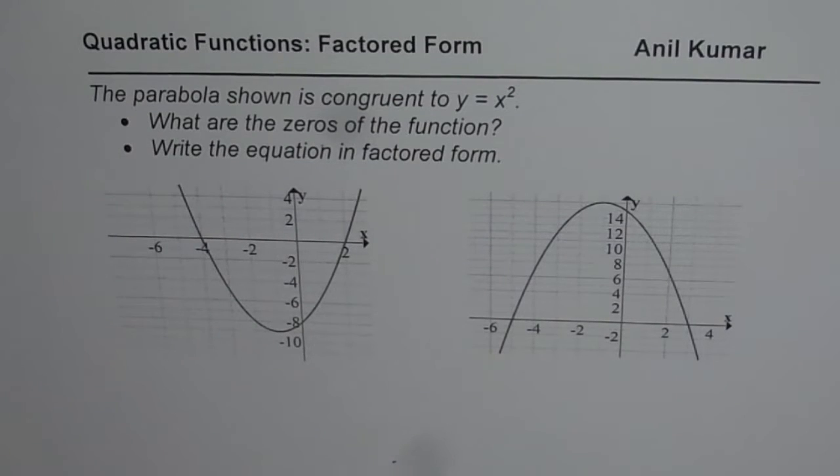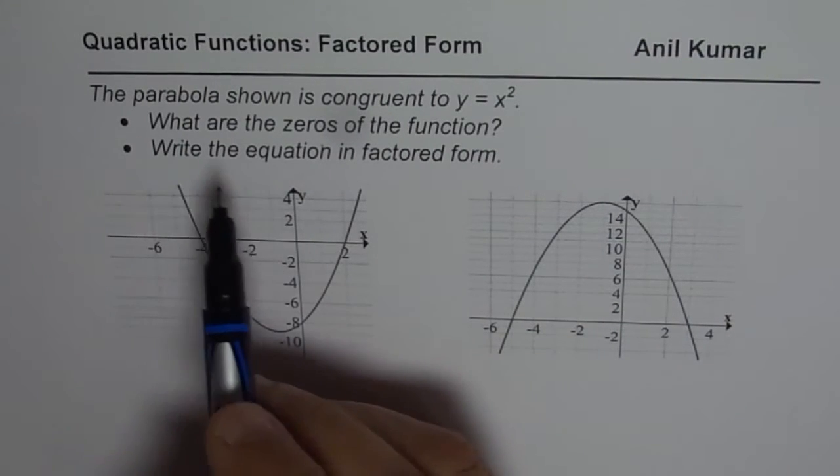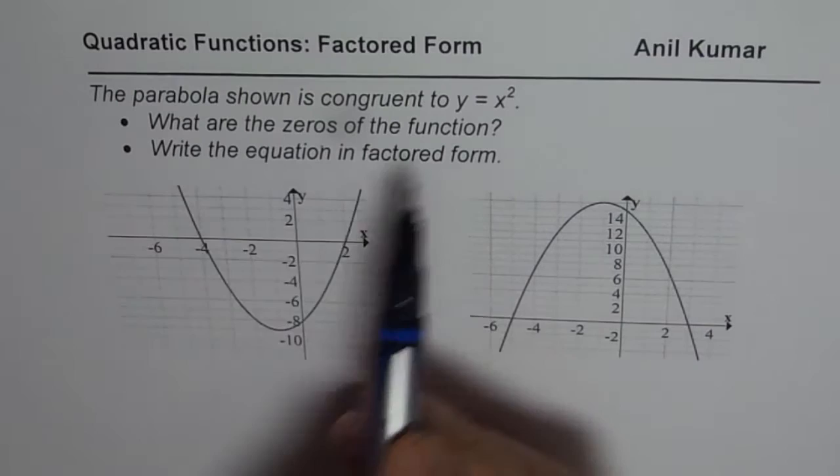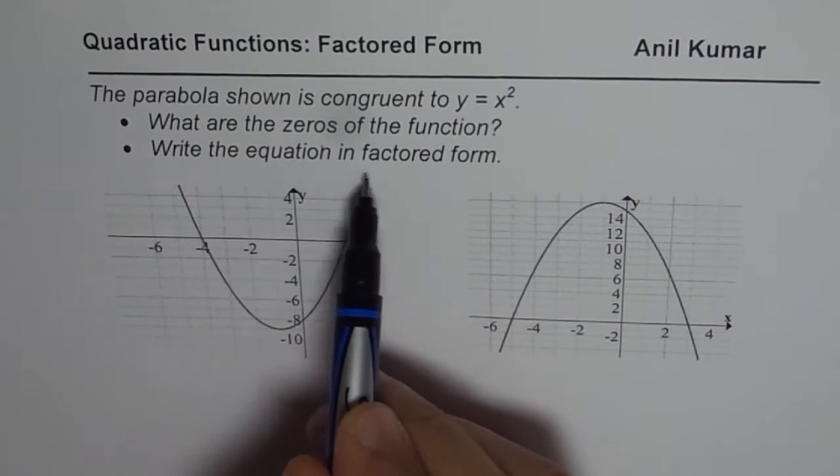I'm Anil Kumar and here are two practice questions for you. We are exploring factored form of quadratic functions. The question is, the parabola shown is congruent to y equals x squared. What are the zeros of the function? Write the equation in factored form.